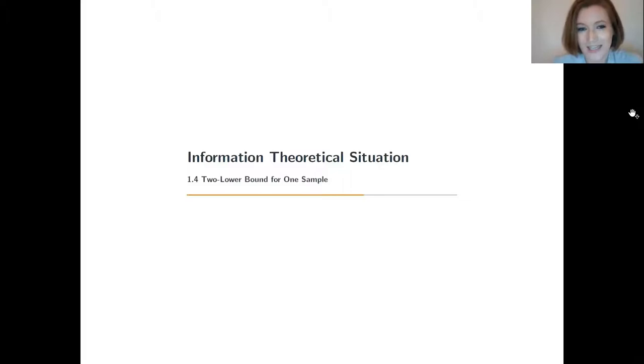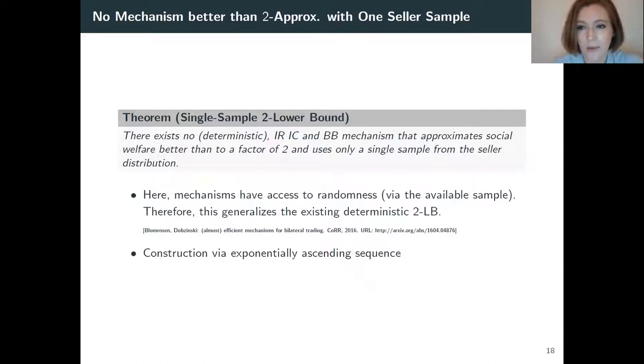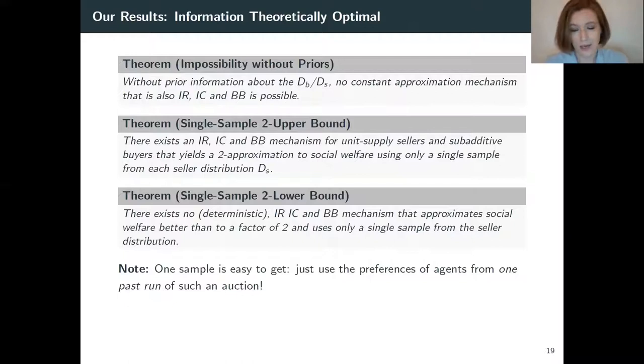With these two results, we have only one more to go in this section, and that is a lower bound. As a last result here, we showed a lower bound that says you cannot essentially do better than this factor of 2, at least not with a deterministic mechanism that only has access to one sample from the seller side. With this 2 lower bound that we construct via an exponentially ascending sequence of values, you can look at the paper for the proof, we conclude our results for the first part of the talk, which is, we have shown there is no way to approximate social welfare up to any fixed factor of alpha without prior information. However, having just one sample from the seller side enables us to do a fairly general 2 upper bound that works via adjusted VCG and for subadditive buyers. And then this is complemented by the just aforementioned 2 lower bound that says no deterministic mechanism can do any better.